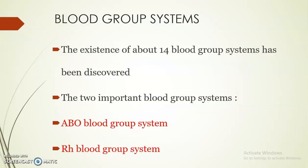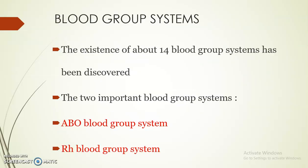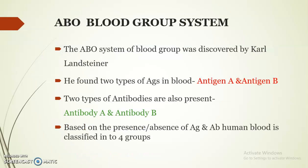About 14 blood groups have been identified. Out of these, the two important blood group systems are the ABO blood group system and the Rh blood group system. The ABO blood group system was discovered by Karl Landsteiner in 1900. He found two types of antigens in blood — antigen A and antigen B — and two types of antibodies: antibody A and antibody B.